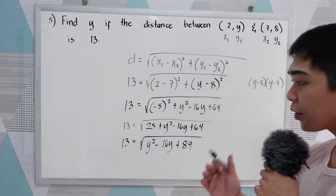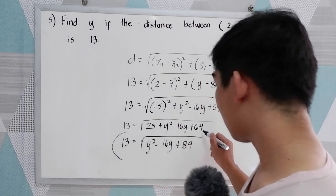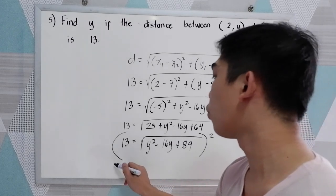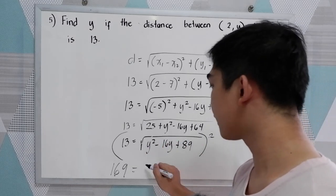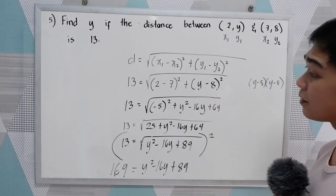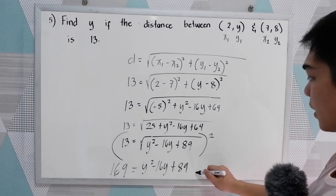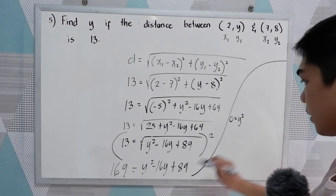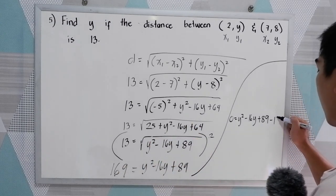We have 13 equals the square root of y² − 16y, and combining constants 25 plus 64 gives 89. So: 13 equals the square root of y² − 16y + 89. Our next goal is to remove the square root — we need to square both sides. So 13 squared is 169, equals y² − 16y + 89, with the square root cancelled out.